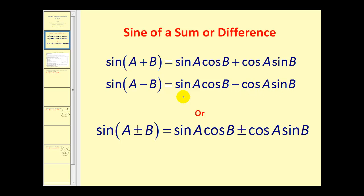We can combine these two identities into a single identity. Notice we have a plus-or-minus sign here and a plus-or-minus sign here. So if we have a sum of two angles, we have a sum of these products. If we have a difference of two angles, we have the difference of these two products.